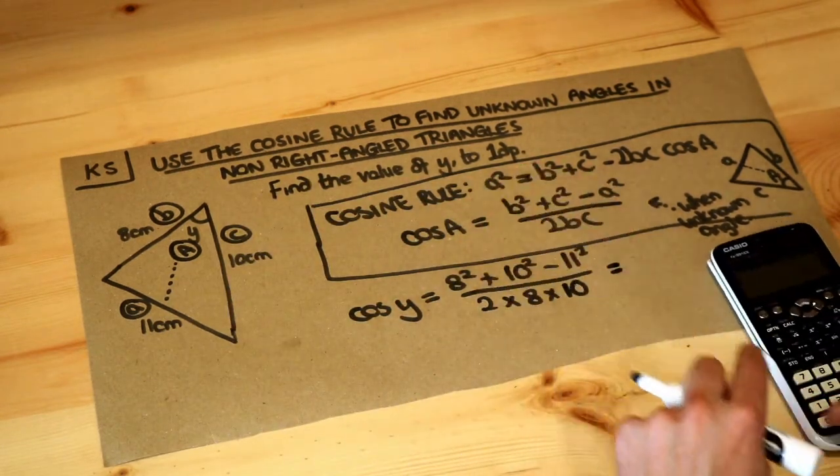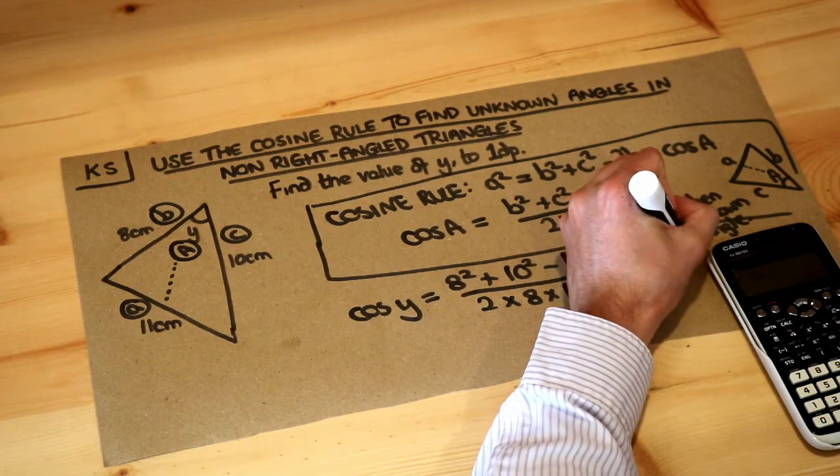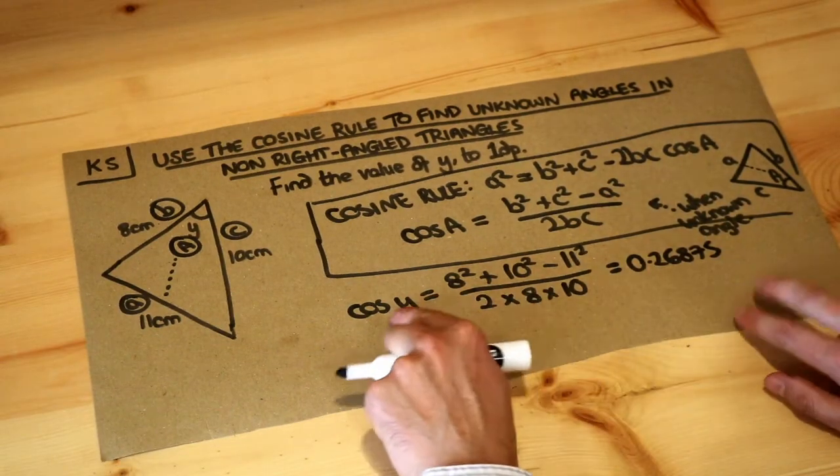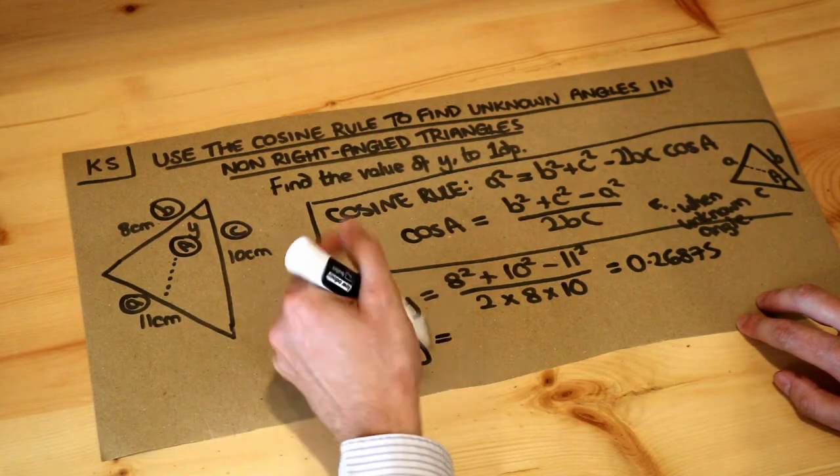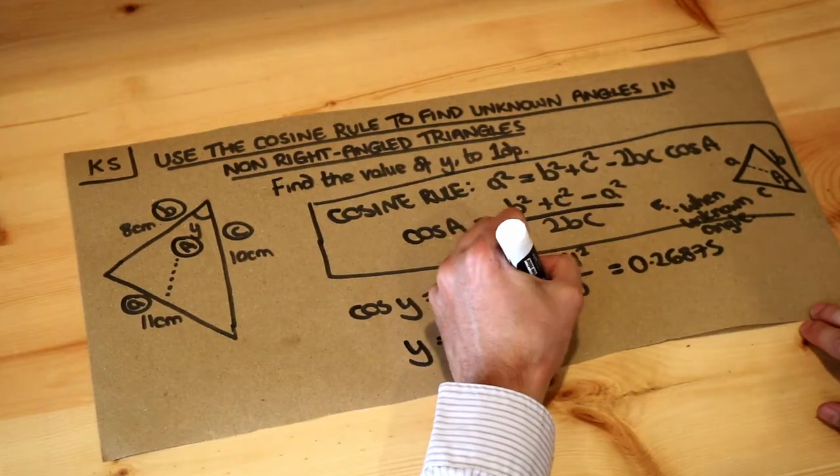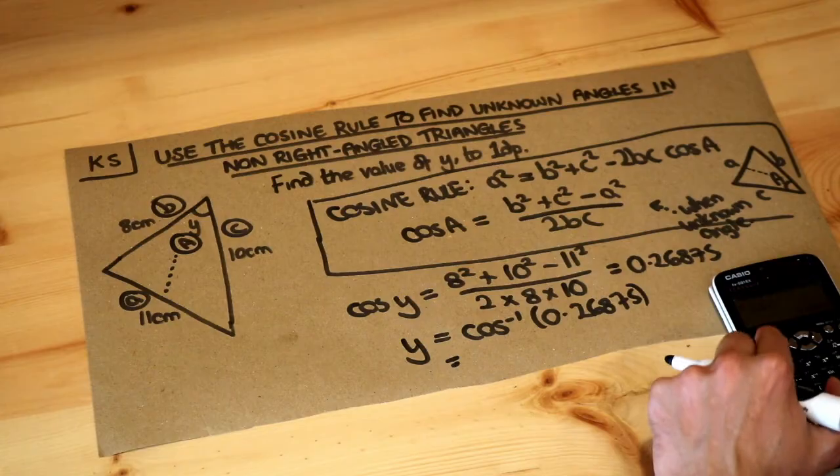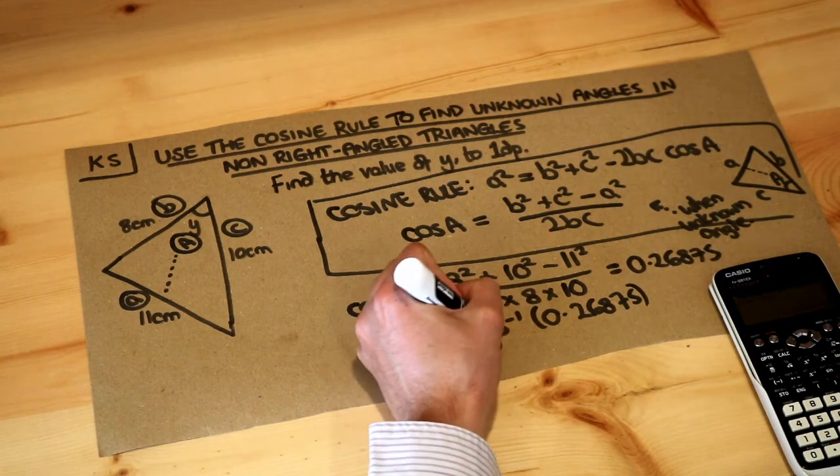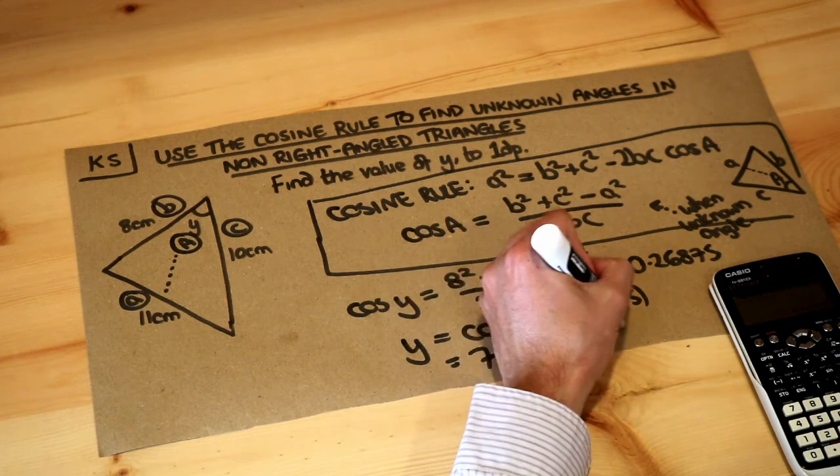And then if I just put that into my calculator I get a value of 0.26875. And then I've got cos of Y equals that. I don't want that cos in front of the Y so I have to do inverse cos of both sides to get rid of that cos. So I just do inverse cos of the right hand side as well. So we can just do shift cos on our calculator to get inverse cos of answer key, to use my previous value. And that gives me an angle of 74.4 degrees to one decimal place.